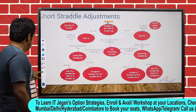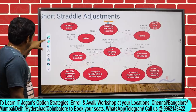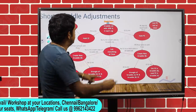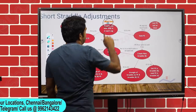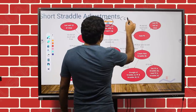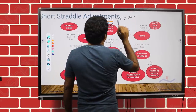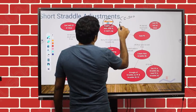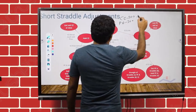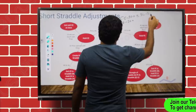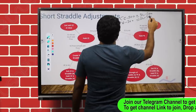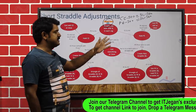So this is where you enter the 920 straddle with 20 percent stop loss. Let's assume you sold the call for 300 and the put for 300. What is your stop loss? Stop loss is 360 — 360 for the call and 360 for the put.